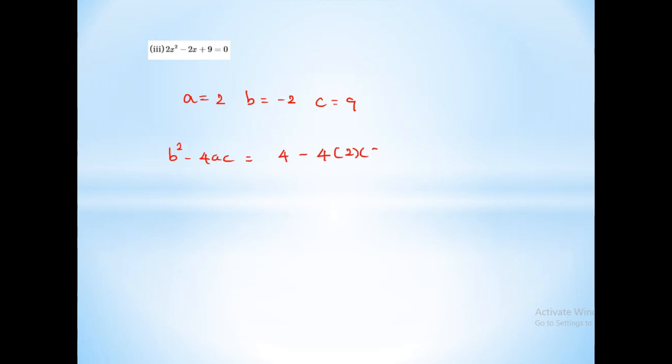Next sum: a equal to 2, b equal to minus 2, c equal to 9. So B²-4ac equals 4 minus 4 into 2 into 9, which equals 4 minus 72, which equals minus 68. This is less than 0. Therefore, roots are imaginary or not real.